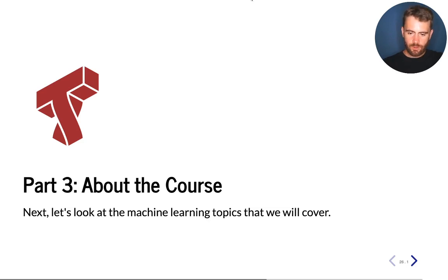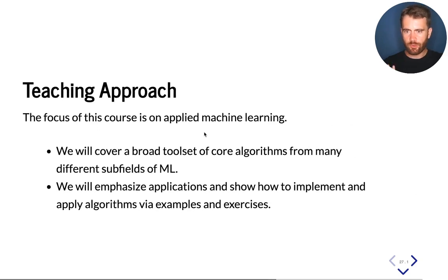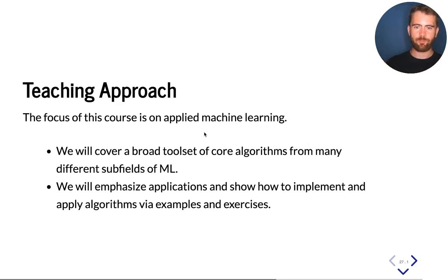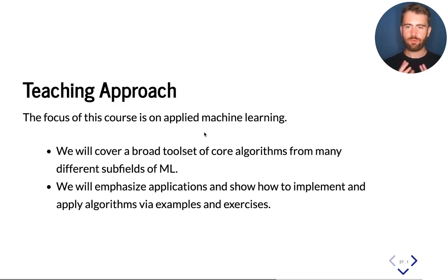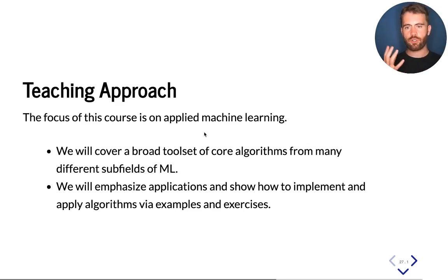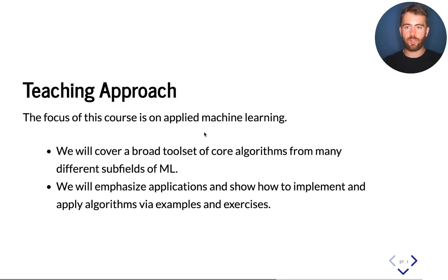I just want to mention how we're going to be approaching the different material that we're going to see. The title of this course is Applied Machine Learning and it has two parts: Applied and Machine Learning. It's a machine learning course in the sense that we're going to see a broad range of tools from different subfields of machine learning and the core algorithms from each area. As a result, you will learn a general toolkit that will be really broad, really general, and applicable to a really wide range of problems.